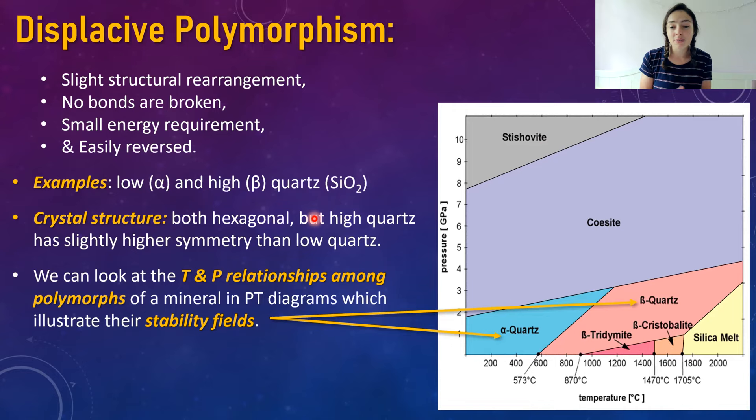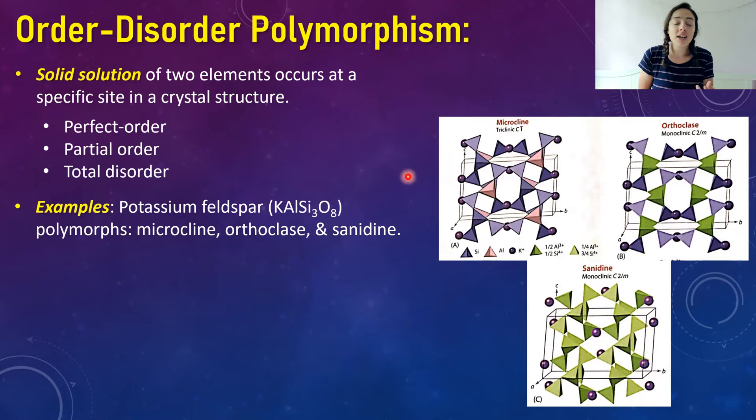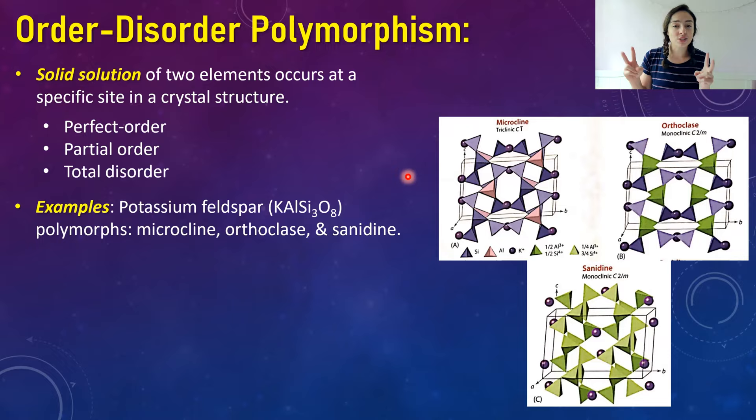Order-disorder polymorphism has to do with exactly what it sounds like: order and disorder within the structure of a mineral. Solid solution of two elements can occur at a specific site in a crystal structure in a way we call perfect order, partial order, or total disorder. To clarify: ionic substitution events can happen at individual sites in a crystal structure without changing the overall composition of the mineral.